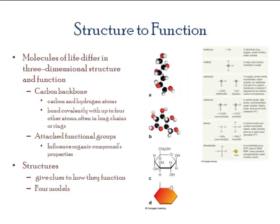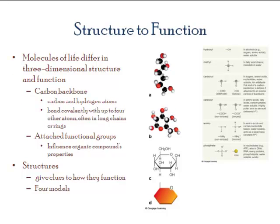Let's look at the term functional group one more time. Keep in mind that all of these molecules have a carbon backbone, which means carbon must be present, and the second most abundant element would be hydrogen. They are covalently bonded to each other. Carbon is an element found in group four, which means that if an element is present in a particular group, it can form that particular number of bonds. So carbon in group four means it can have four bonds.